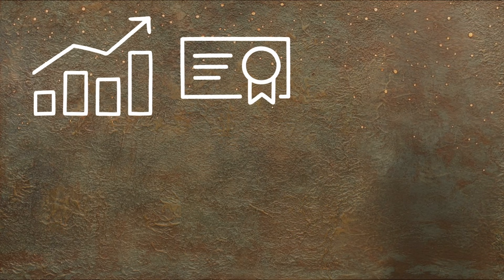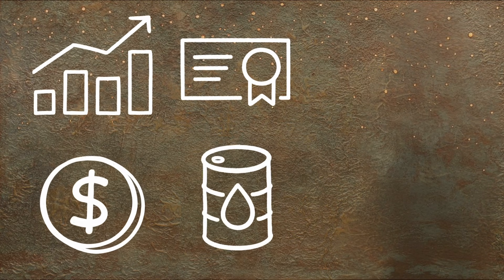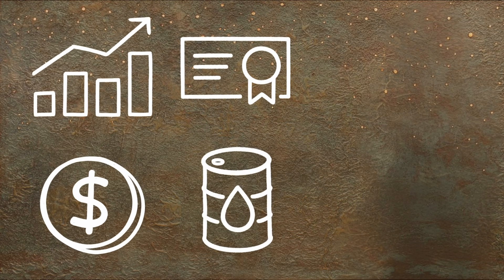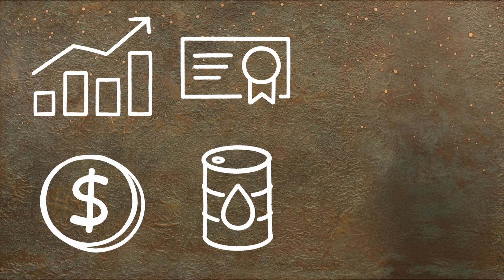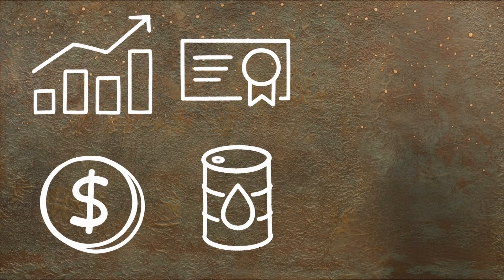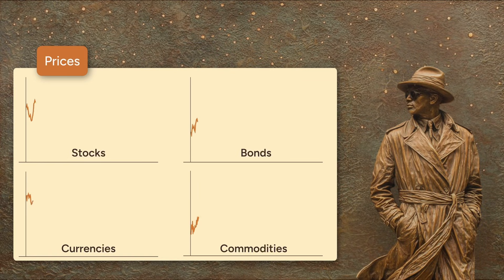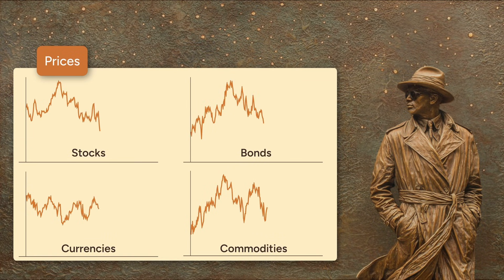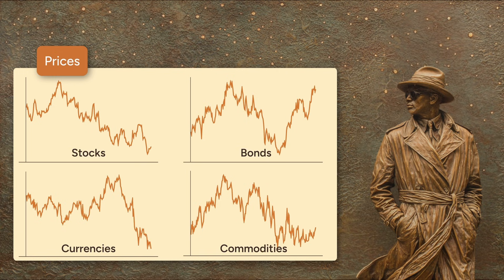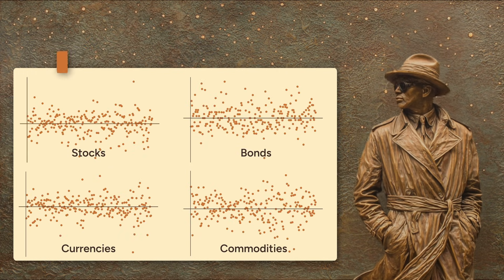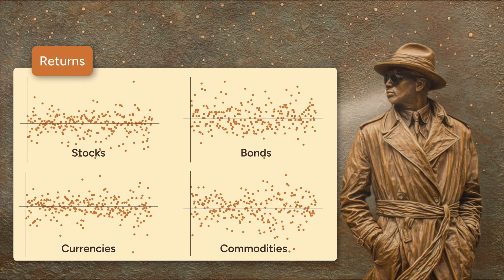Stocks, bonds, currencies, and commodities. We look at all sorts of assets in finance, and it's tempting to fixate on their prices. But prices alone don't tell us how unpredictable or stable an investment might be. Switch from looking at prices to looking at returns, and it's a whole new story.